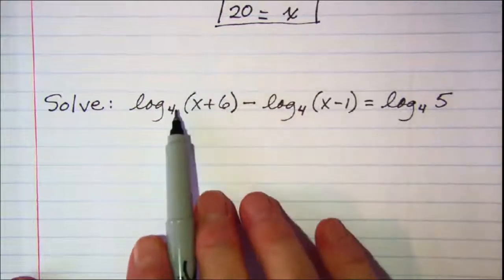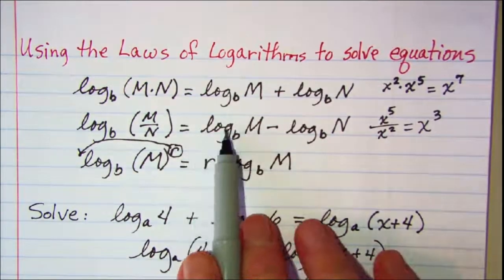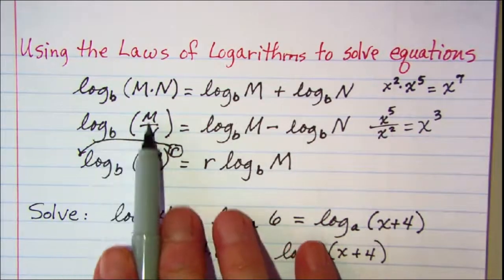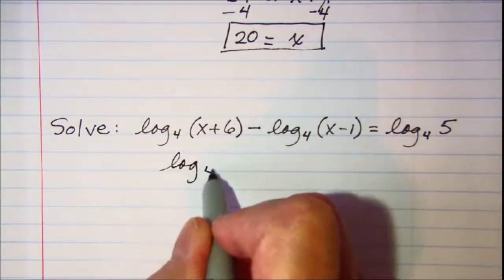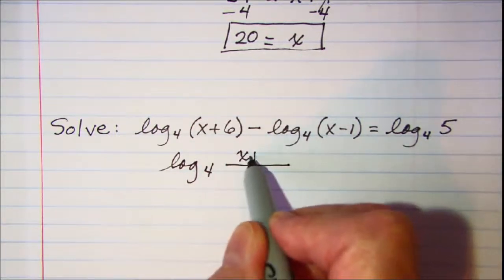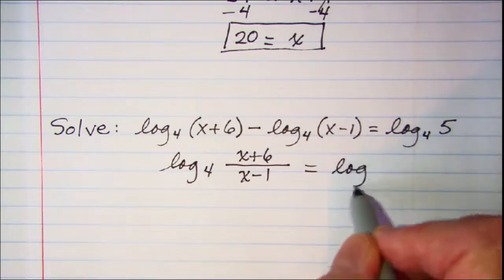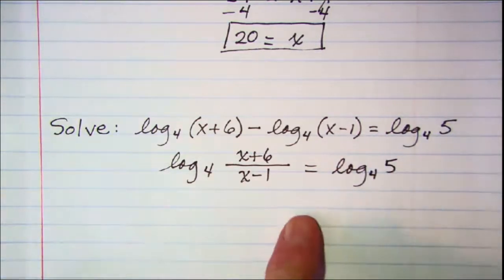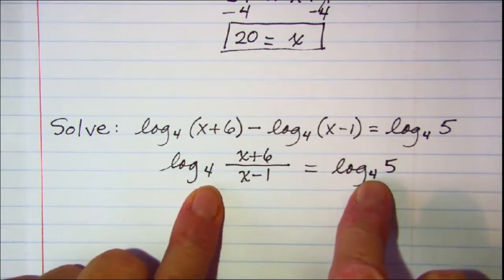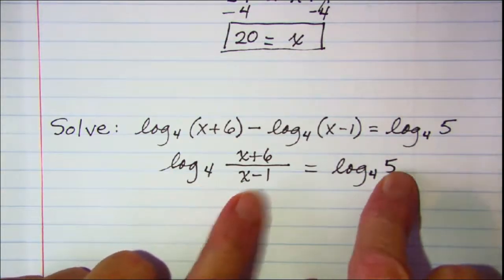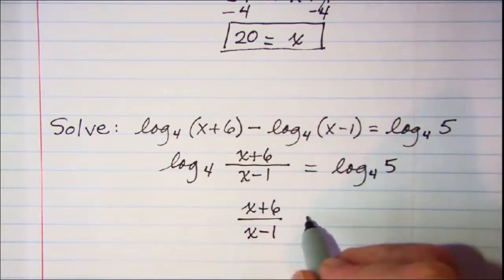On this next equation, the left side is the difference of logarithms. From the second rule, the difference of logarithms can be written as the log of a quotient. So the left side can be rewritten as log base 4 of the quotient (x plus 6) divided by (x minus 1). Copying the right side, we now have an equation with log base 4 on both sides, so we can set the arguments equal: (x plus 6) divided by (x minus 1) is equal to 5.